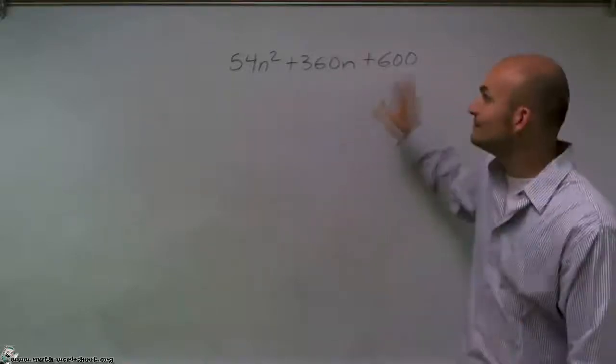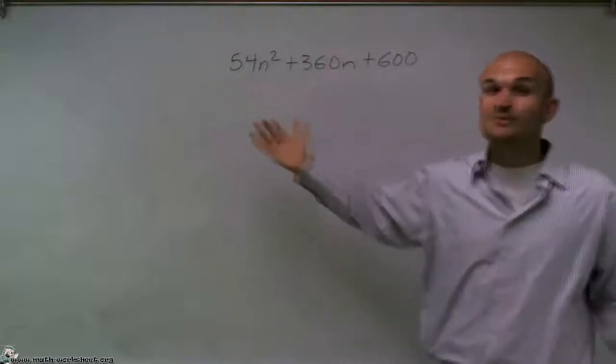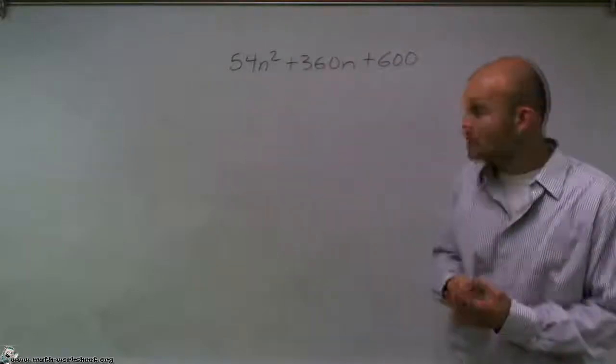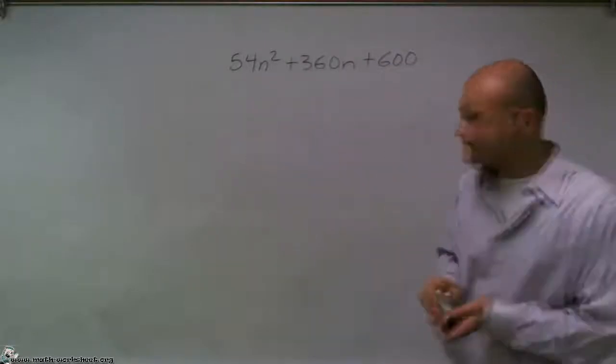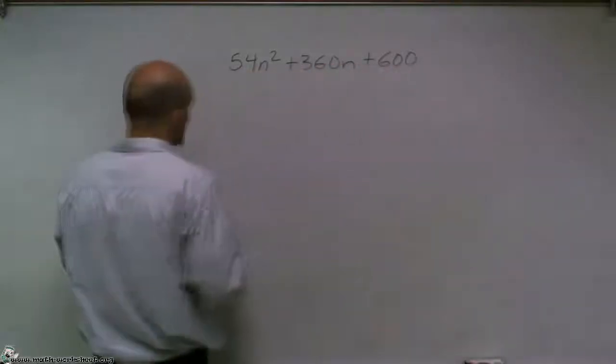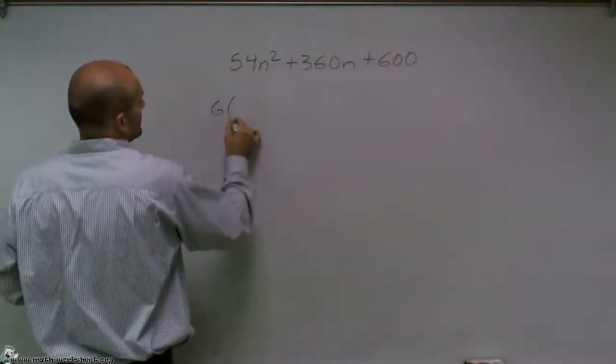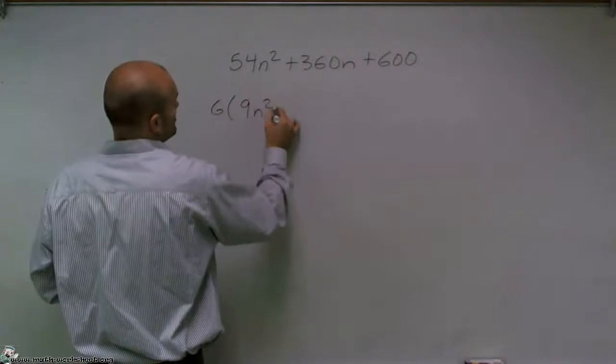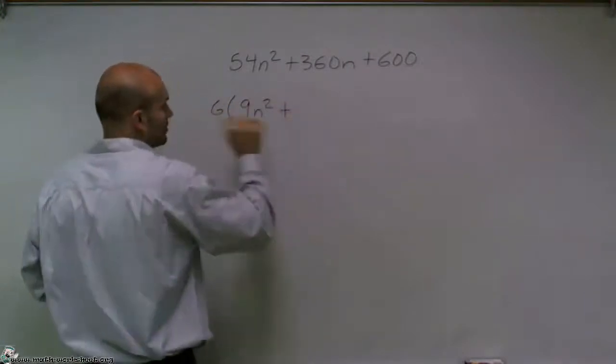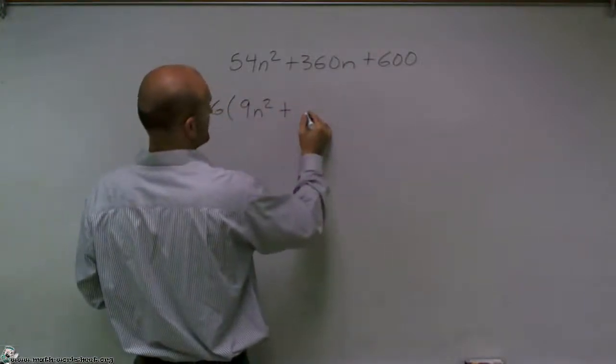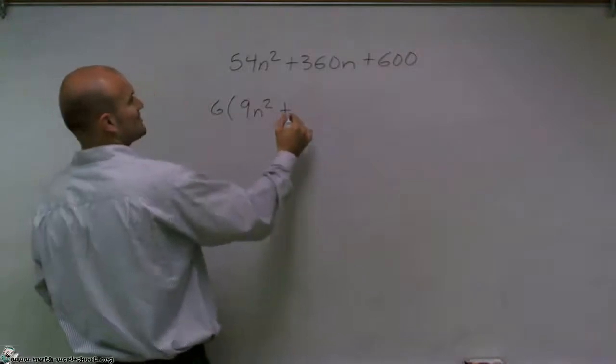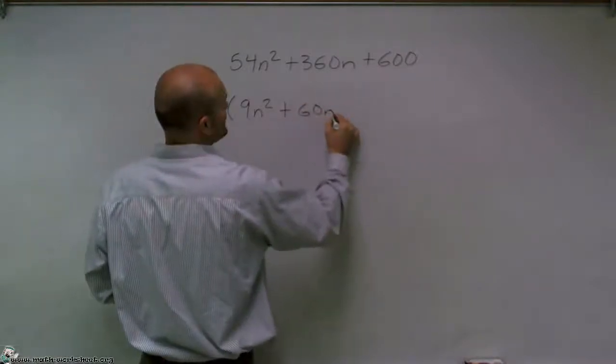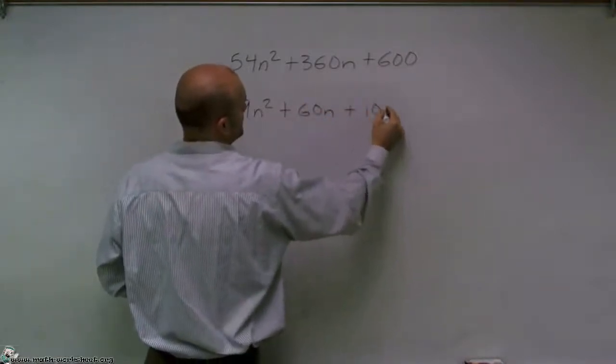And I ended up getting that answer to be 6. So I can evenly divide 6 into all three of these, but that's going to be the largest number that I can do that with. So I'm going to factor out a 6. And when I do that, I'm going to do the 9n squared plus 60n plus 100.